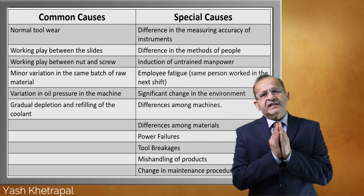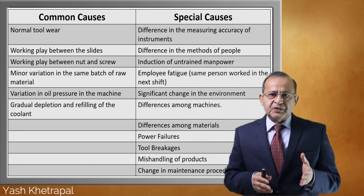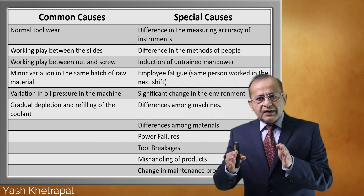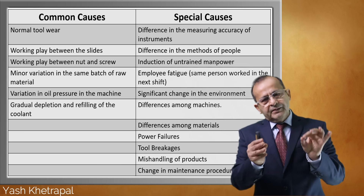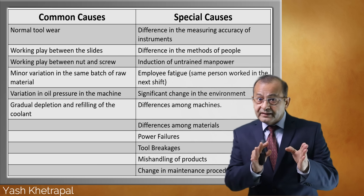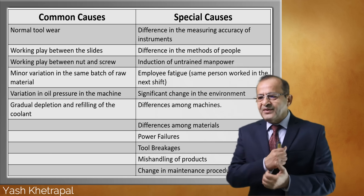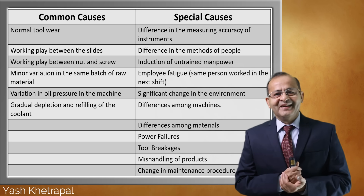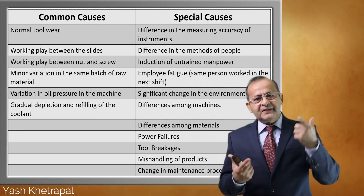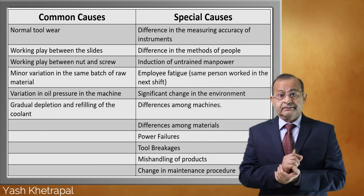Working play between slides — when the machine was made, the machine maker deliberately gave some working play so that the slide could move smoothly and lubricant could enter. Thanks to this play, the slide moves a few microns here and there, causing variation in the process — and you have to live with it. Also, minor variation in the same batch of raw material: you got 20 tons of raw material, and even with a certified supplier providing a material certificate, there may be minor variation within the batch. The metal is still within range.